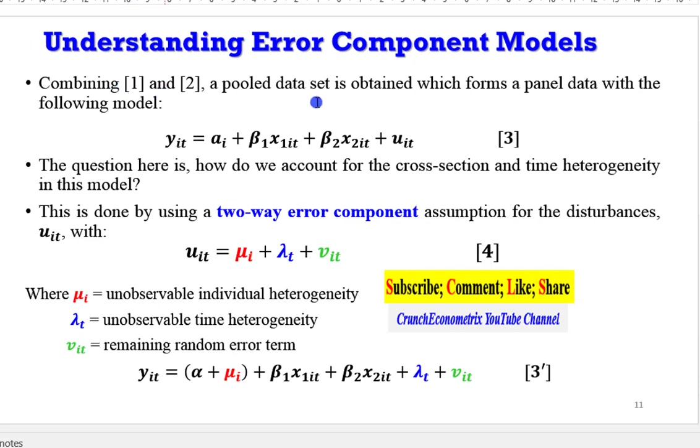So, combining equations 1 and 2, we have a pooled data obtained in the form of panel data given as equation 3, where we have the subscript it. So whenever you see a subscript it together like this, it is an example of a panel data model or a panel data equation.